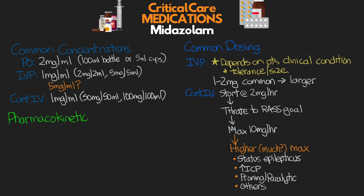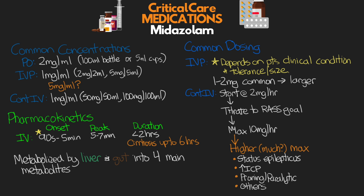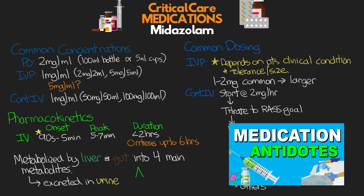For pharmacokinetics with IV administration, onset is fairly quick — anywhere from 90 seconds to 5 minutes, typically trending toward 90 seconds. Peak effect is at 5 to 7 minutes, and duration is typically less than 2 hours. In patients with cirrhosis, duration can extend up to 6 hours, because midazolam is metabolized primarily in the liver and gut into four main metabolites, all of which have various roles in the drug's effect. These metabolites are excreted in the urine.